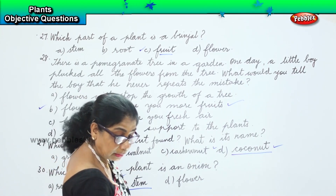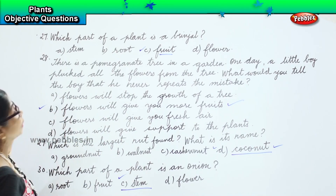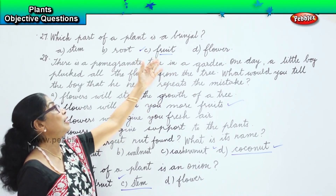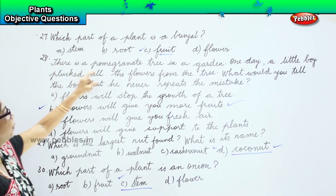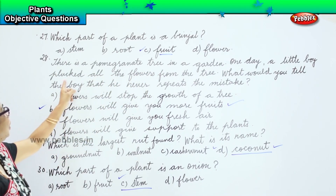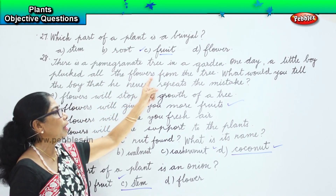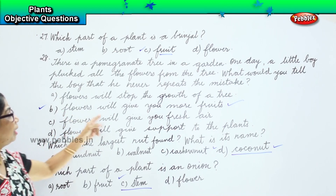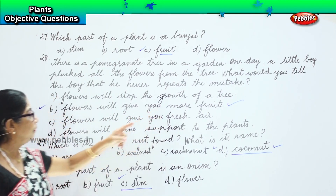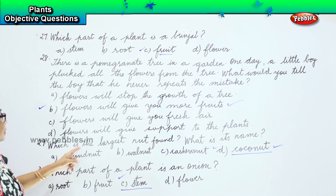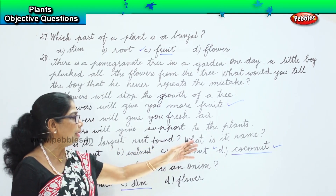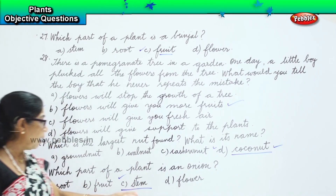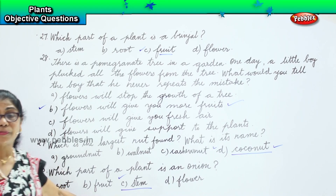Now let's look at all three answers to the questions here. 27th: which part of a plant is brinjal? Brinjal is a fruit. 28th: there is a pomegranate tree in the garden; one day a little boy plucked all the flowers from the tree — I tell the boy that flowers will give you more fruit, so do not pluck flowers. 29th: which is the largest nut found? The largest nut is coconut. 30th: which part of a plant is an onion? An onion is a stem — that's the stem of a plant.